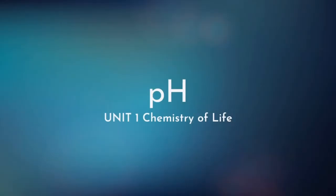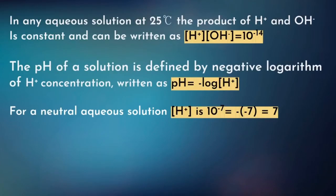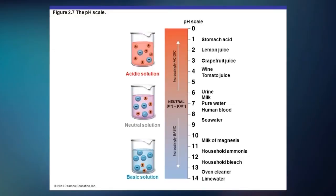The next concept I'll talk about is pH. In any aqueous solution at 25°C, the product of H⁺ and OH⁻ is constant. The pH of a solution can be calculated by the formula: negative log of the concentration of hydrogen ions. For a neutral aqueous solution, pH is always 7. On the pH scale, neutral 7 is in the middle. 1 to 7 is acidic — these are sour ones. The basic solution, 10 to 14, is usually bitter. As the pH decreases, it is a stronger acid, and as it increases, it is a stronger base.